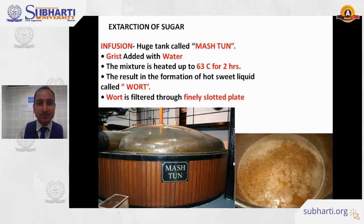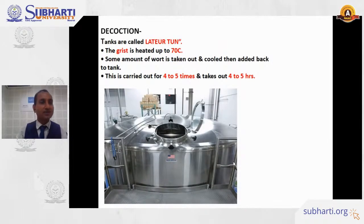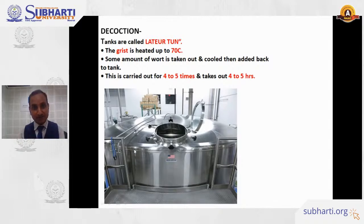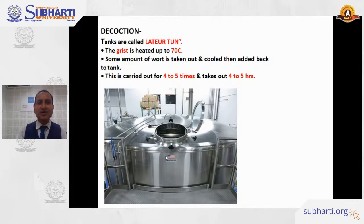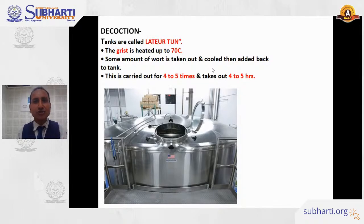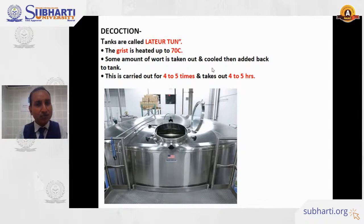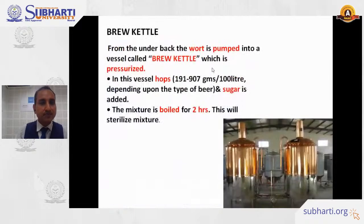The sugar starts dissolving into the water. In the decoction step, the wort is taken into the lauter tun — a machine into which the wort is put and heated again to 70 degrees Celsius for four to five hours. Decoction is the process of extracting flavors from ingredients into the liquid. So the material went from green malt, to grist, and now is wort.